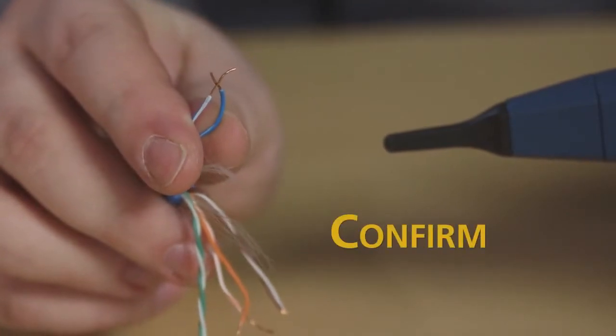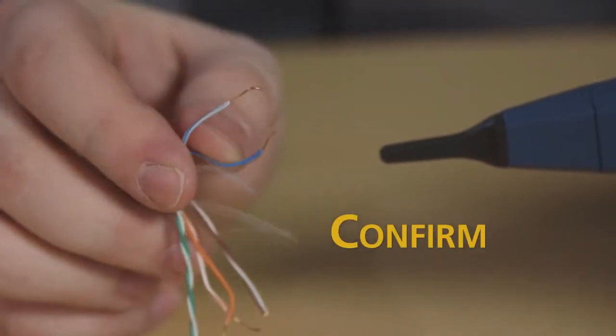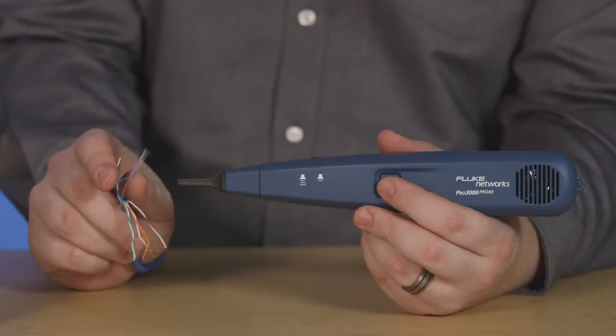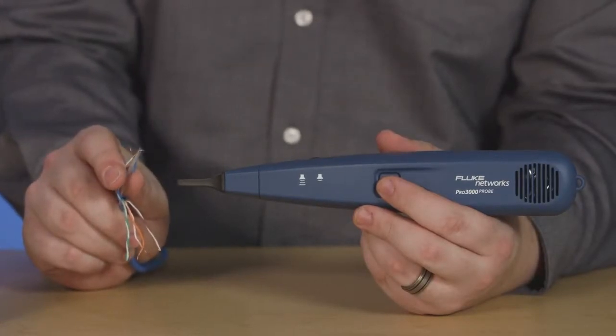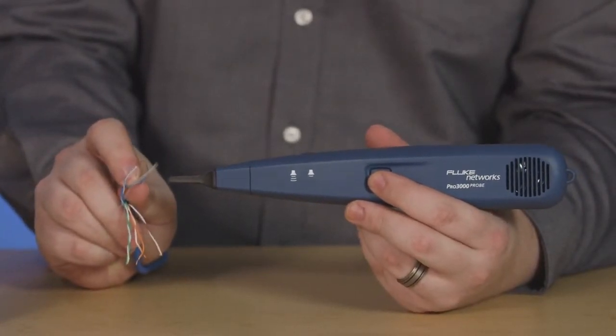To confirm you've got the right pair, simply touch the tested pair together for two seconds to create a short. If it's the right pair, the tone will change each time you short the pair.